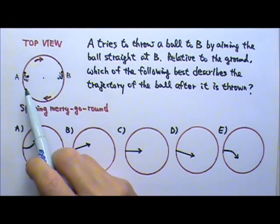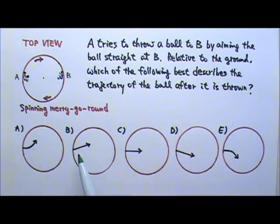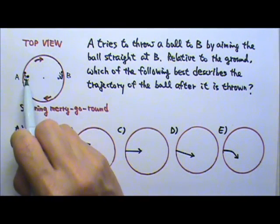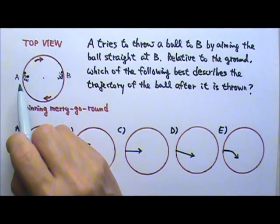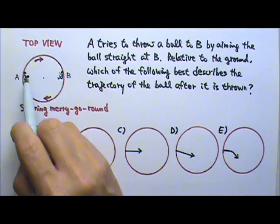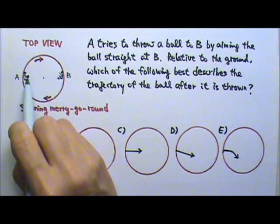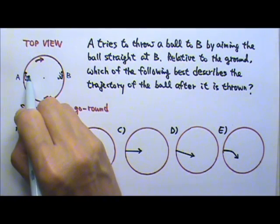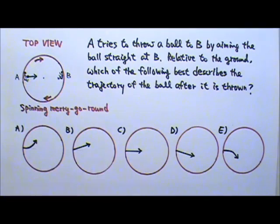In this problem, the observer is on the ground, so if you are standing on the ground and look at the ball, the ball would get two velocities. One velocity from person A, throwing the ball to the right. So the ball gets a velocity from the person.